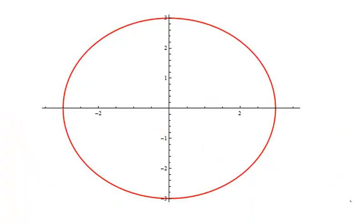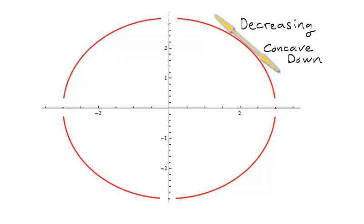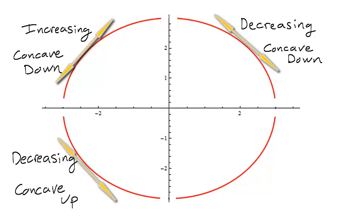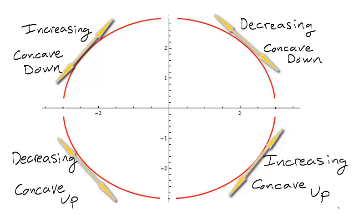A useful way to identify concavity is by quartering a circle horizontally and vertically. Quadrant 1 is decreasing and concave down, quadrant 2 is increasing and concave down, quadrant 3 is decreasing and concave up, and quadrant 4 is increasing and concave up. With these four arrangements in mind, one can estimate whether the first or second derivative of a function is positive or negative just by looking at the graph.